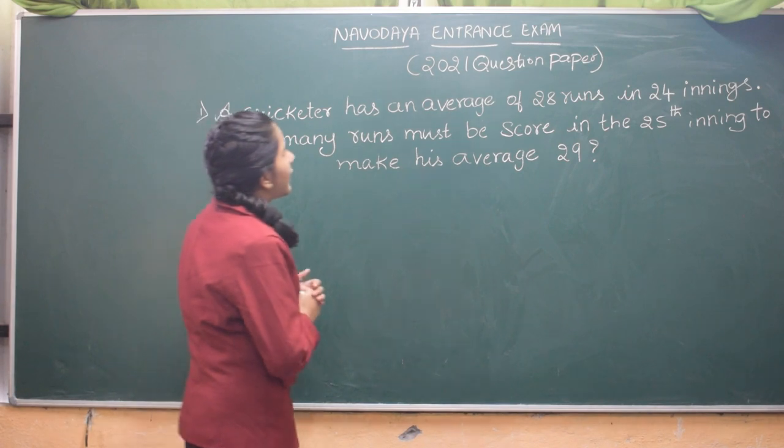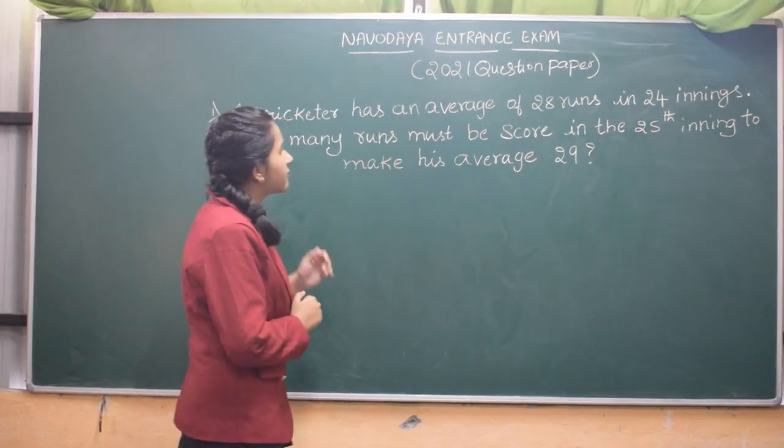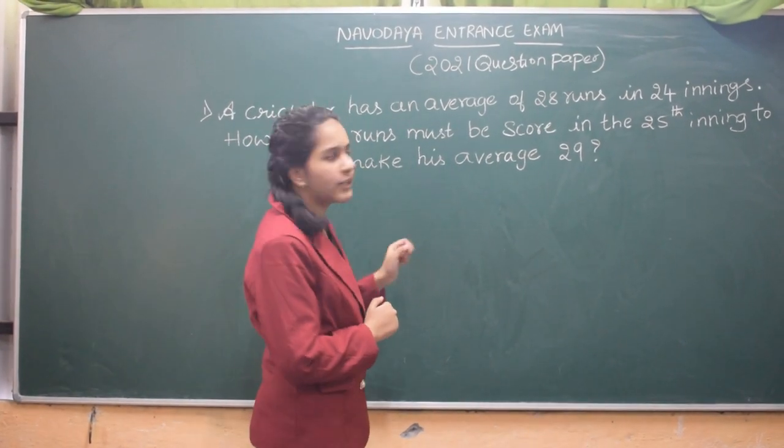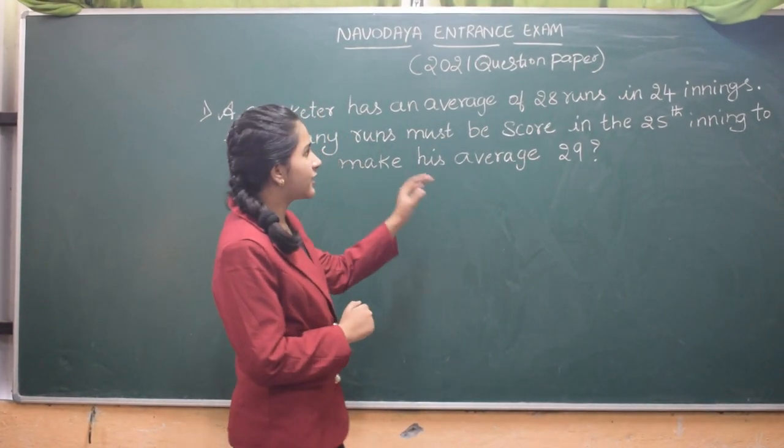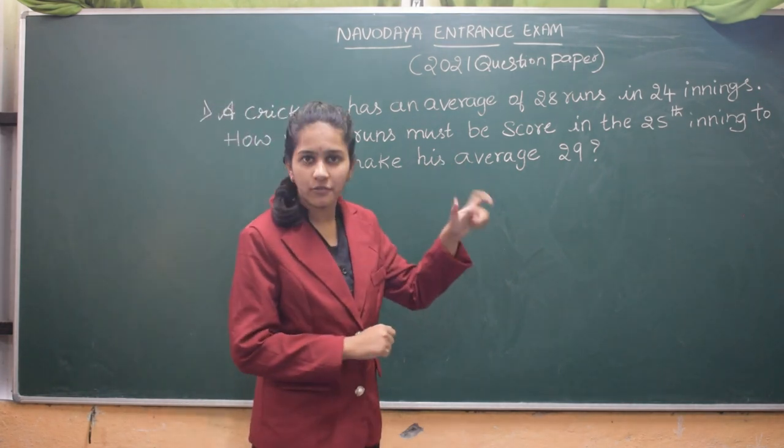A cricketer has an average of 88 runs in 24 innings. How many runs must be scored in the 25th inning to make his average 29? So now the cricketer has completed 24 innings and he have an average of 28 runs.